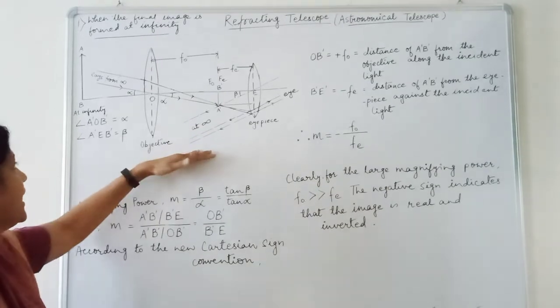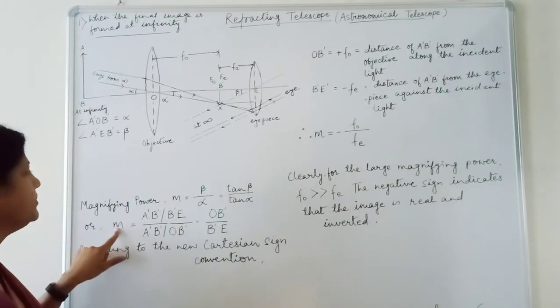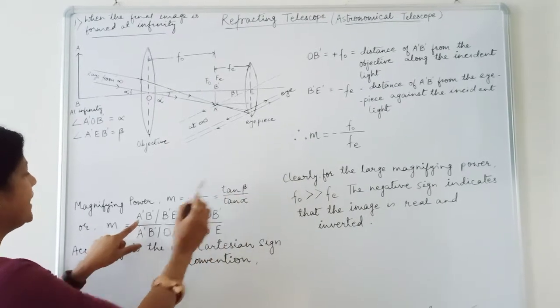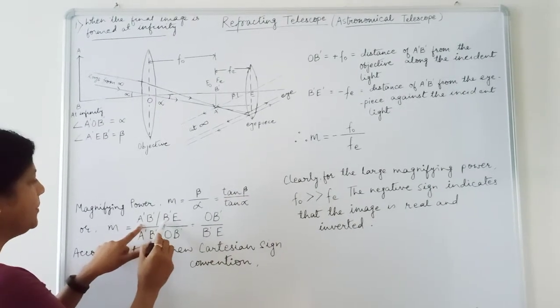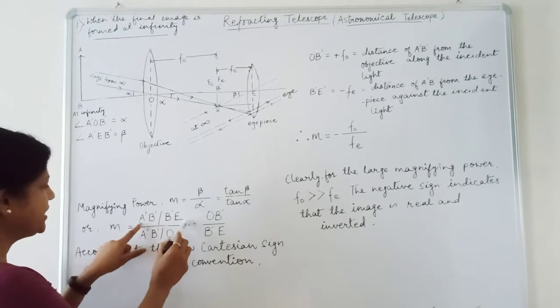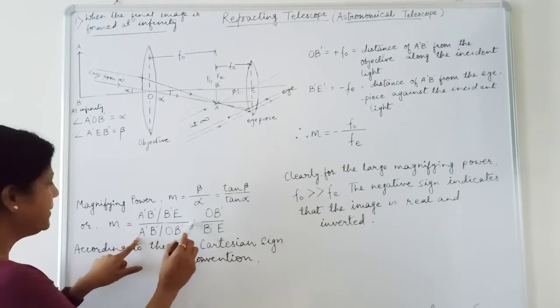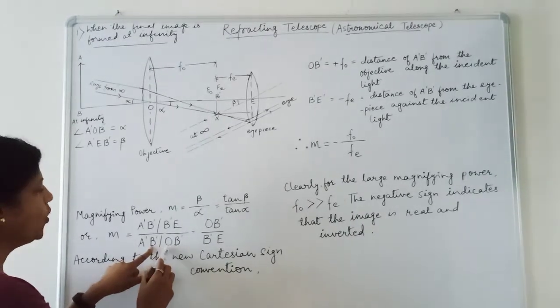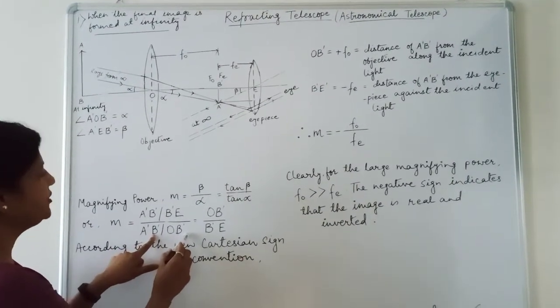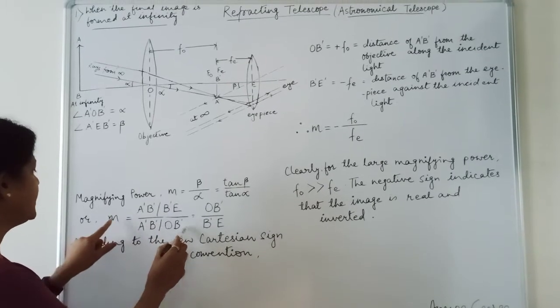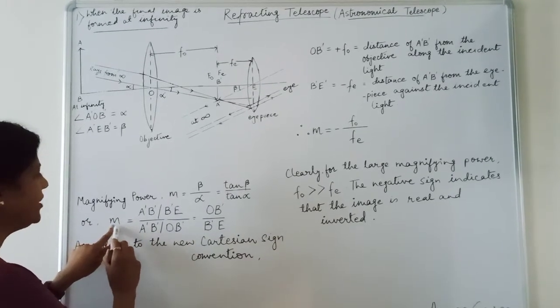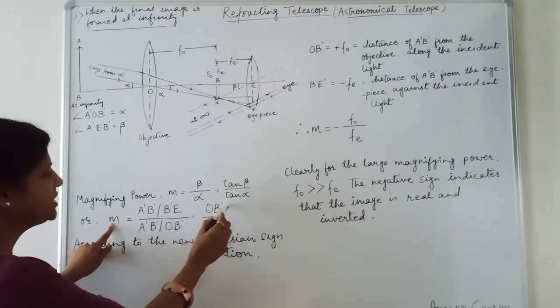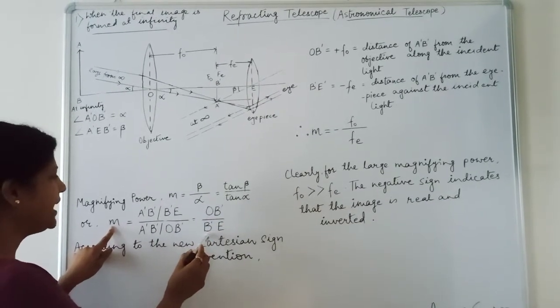from the ray diagram M is equal to tan beta. For tan beta, we can write A dash B dash upon B dash E divided by A dash B dash upon OB dash. After simplification, we can write M magnifying power is equal to OB dash upon B dash E.